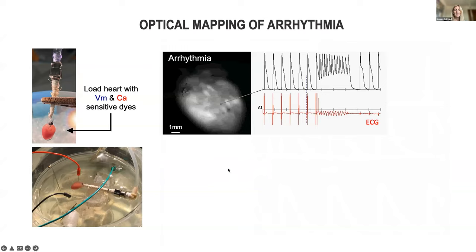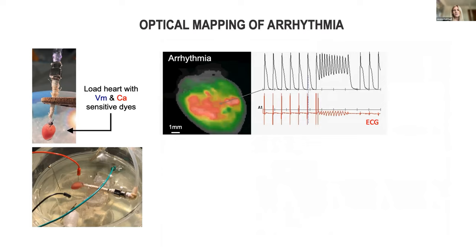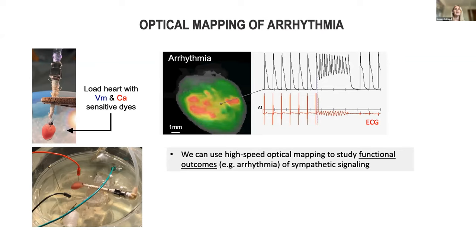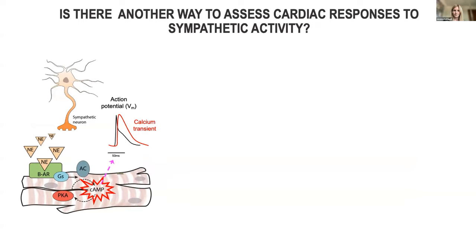We're also able to use this technique to look at arrhythmia, or irregular heartbeat. We can see irregular heartbeat become more irregular as the electrical signals become non-uniform, which further highlights the importance of studying the organ as a whole. This shows that we can use high-speed mapping on the macroscale level to look at functional outcomes of sympathetic signaling. What I have been very interested in is to determine if there's a way to measure the upstream molecular responses to sympathetic activity across the whole organ.